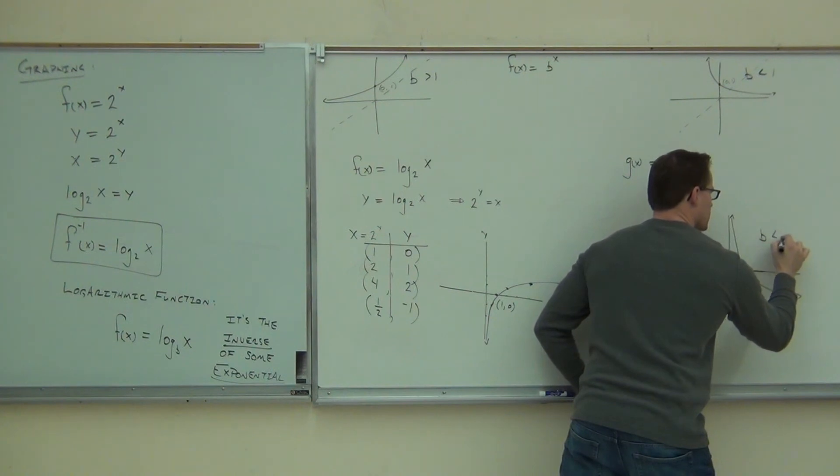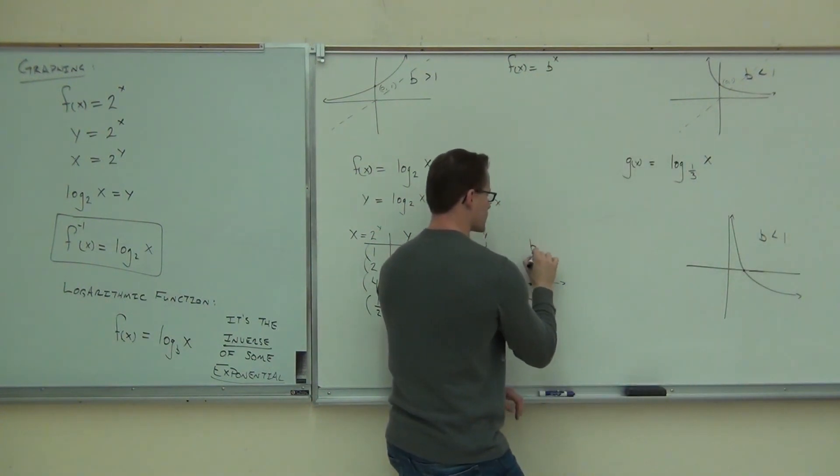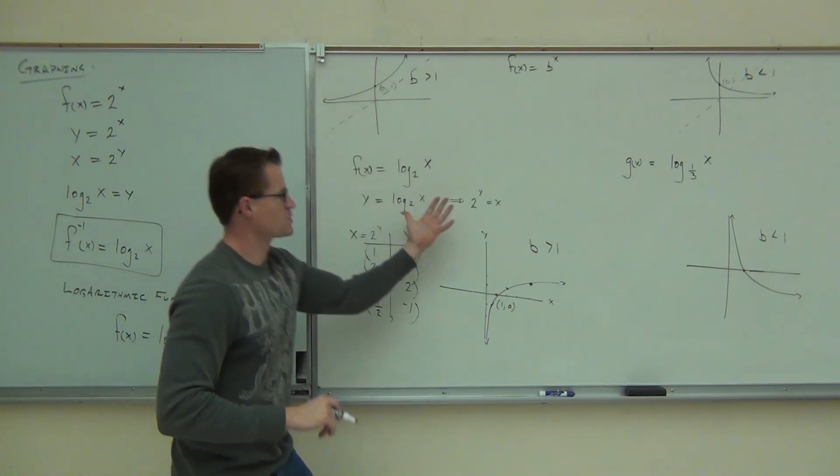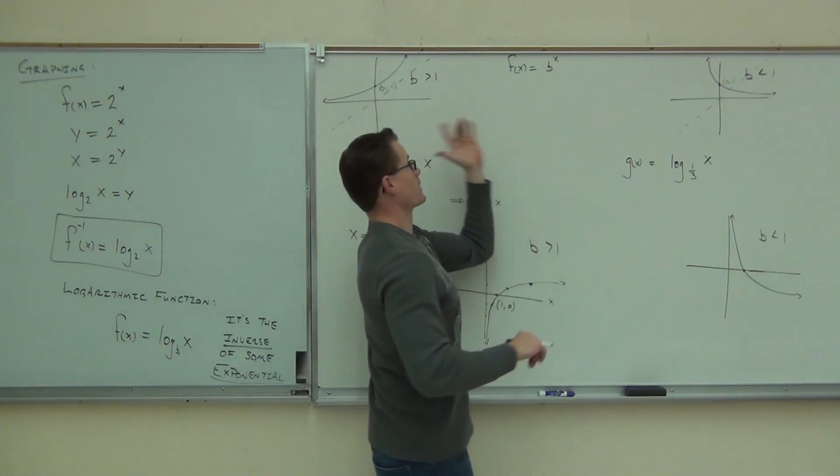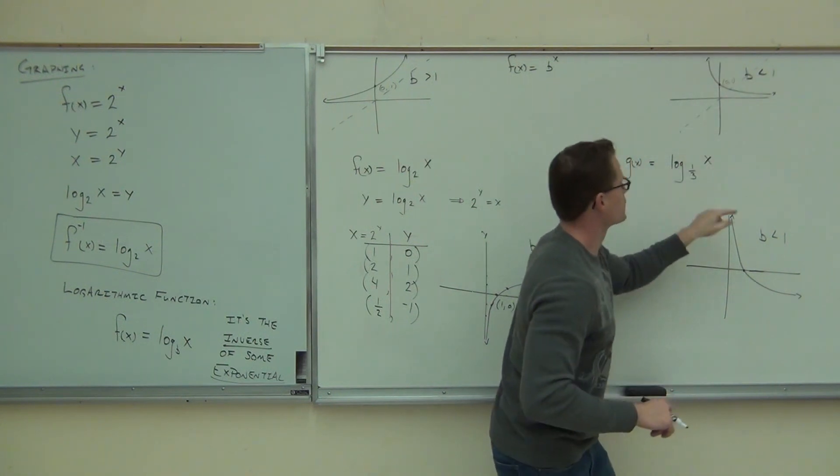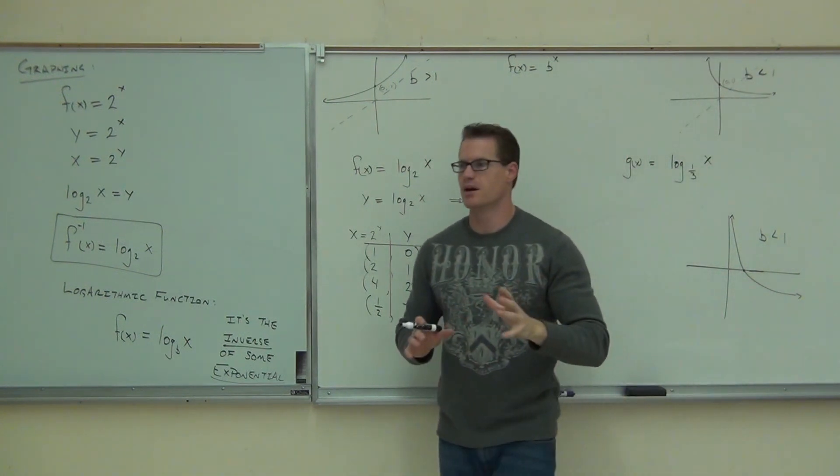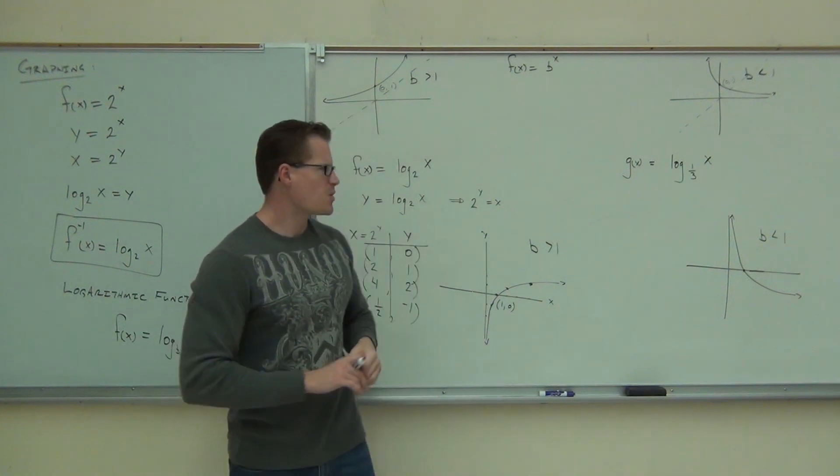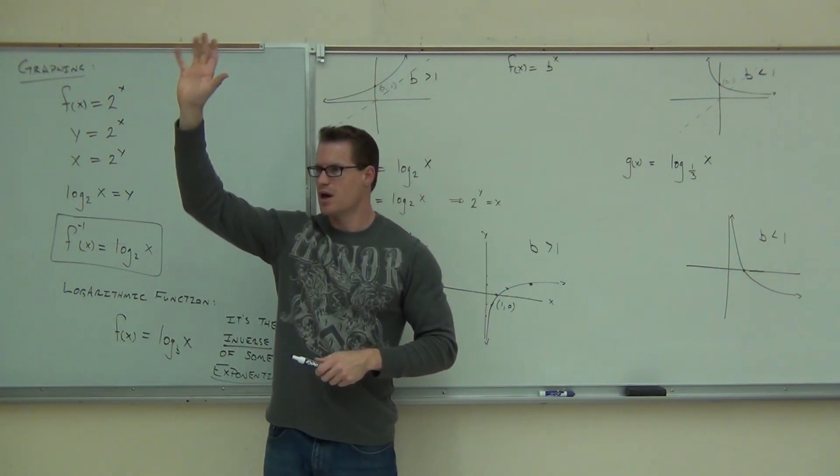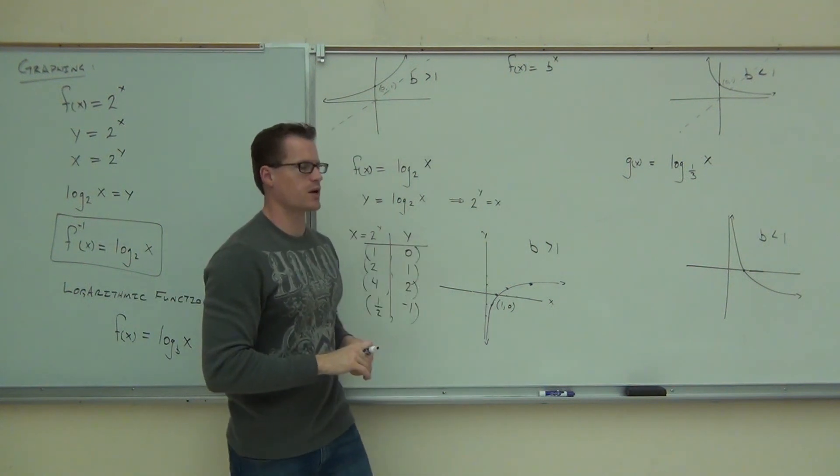This is for your base less than 1. This is for your base greater than 1. You take this, you flip it across the x-axis, you're going to get this picture. I'm sorry, y-axis line. If you take this and flip it across your y-axis line, you're going to get that picture. It's going to flip that across that diagonal line. How many people understand the graphs of these things, these logarithmic functions? They're inverses, they're reflections across the line y equals x.